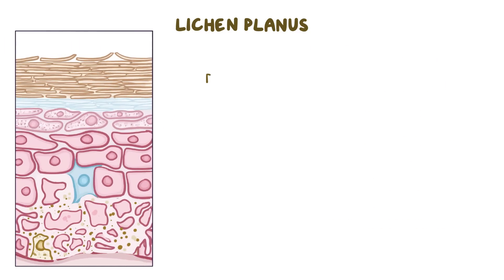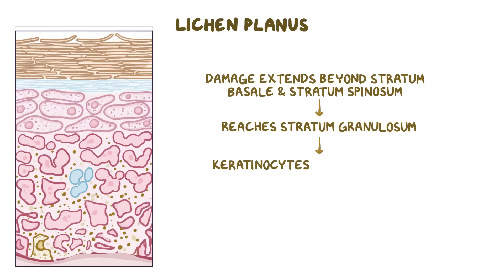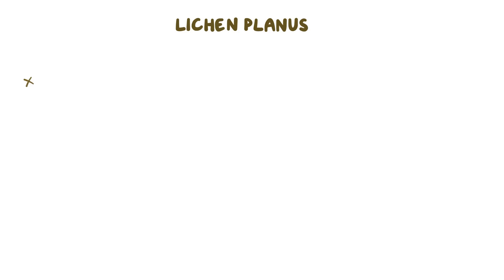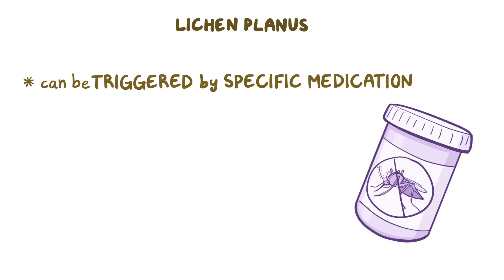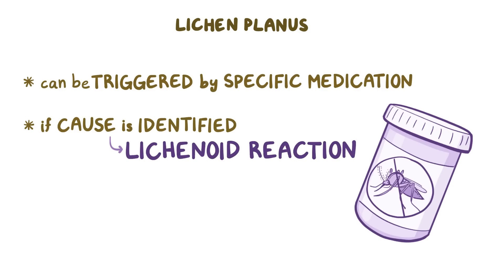Over time, the damage caused by cytotoxic T cells extends beyond the stratum basale and stratum spinosum and reaches the stratum granulosum. Keratinocytes in the stratum granulosum respond by increasing in both number and size, which causes the stratum granulosum to become thicker — this is called hypergranulosis. In some cases, this process gets triggered by a specific medication like antimalarial medication. And if a cause is identified, then it's called a lichenoid reaction rather than lichen planus.